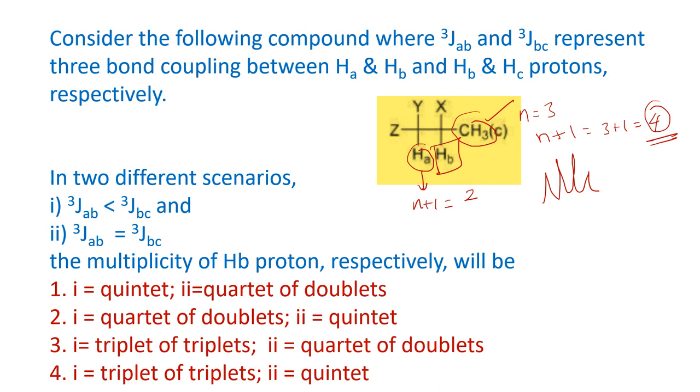Next, another case is assuming JAB is equal to JBC. In the sense, both these coupling constants will overlap because their values are similar. So it will follow the normal trend which is 3 for the methyl protons, 1 for the A proton which is equal to 4, 4 plus 1 because it is N plus 1, you get 5. So what we will get will be a quintet. In the second case, we will get a quintet.